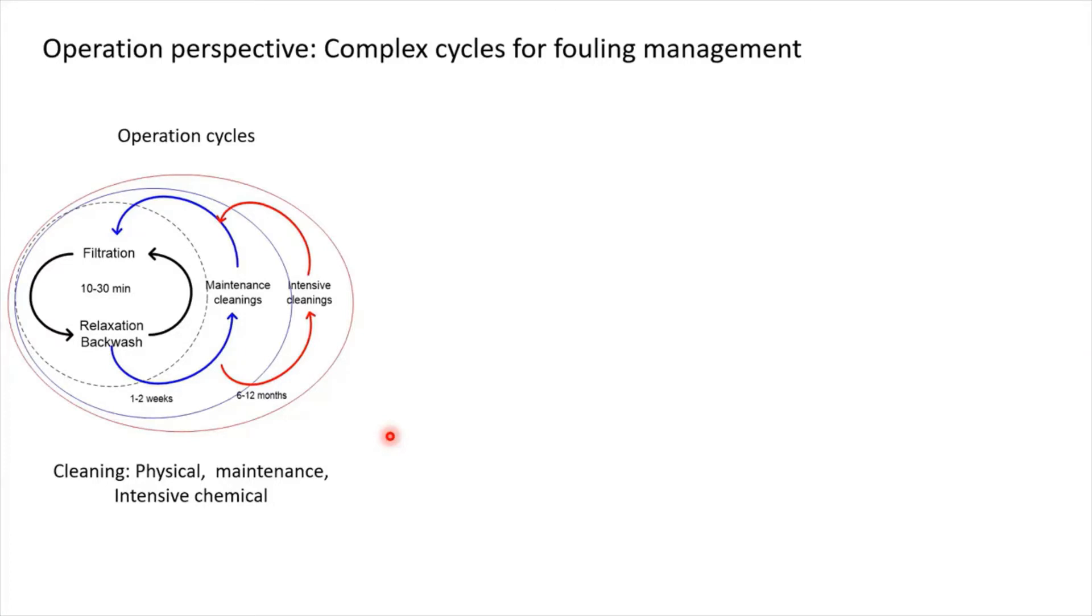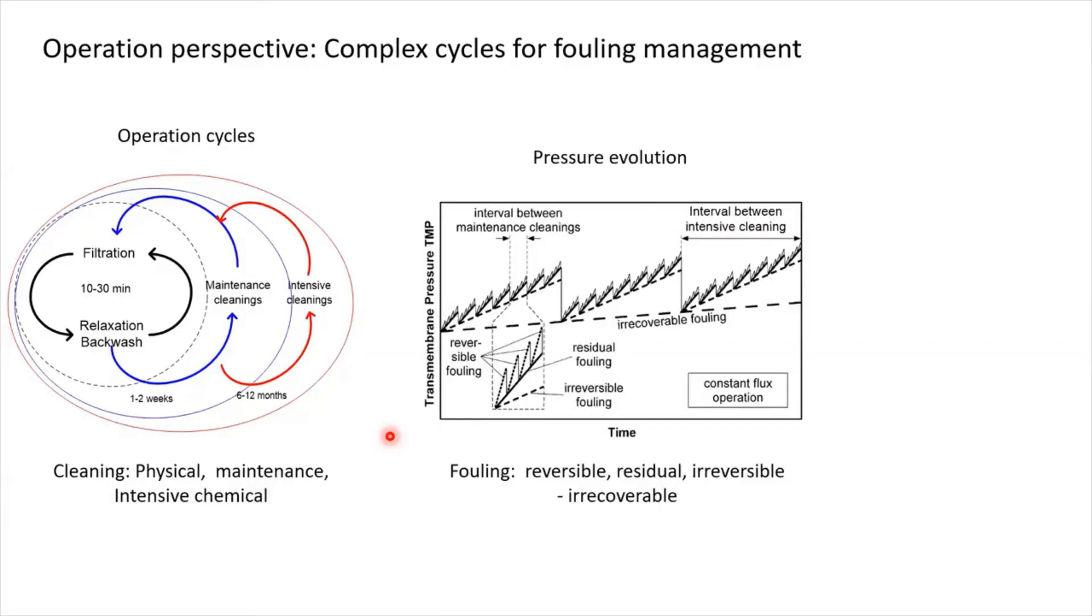So the operation is complex. If you want to portray the complexity of operation in the pressure evolution, as you can see here, you see the transmembrane pressure goes up over time, you do the cleaning, go up, cleaning, go up, cleaning and so on. As a function of time, because of the permanent fouling, you will lose the original performance of the membrane and eventually need to replace the membrane.